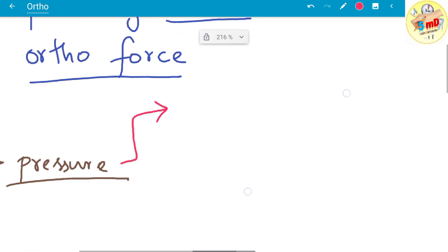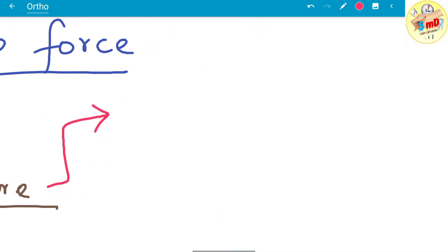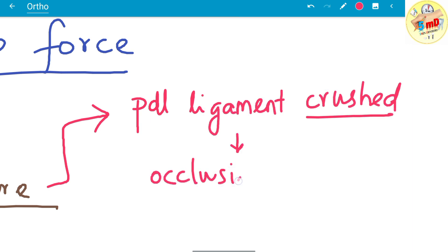In case of excessive force, the pressure side sees the following changes: The periodontal ligament is crushed due to more than optimal force, and occlusion of the blood vessels may result in lack of nutrition to the periodontal ligament surrounding the tooth.